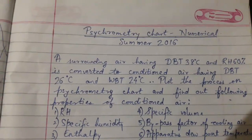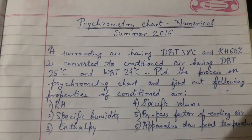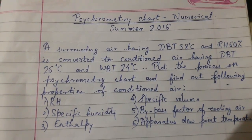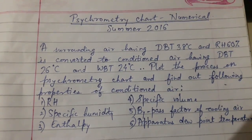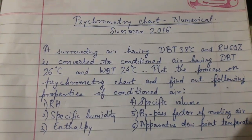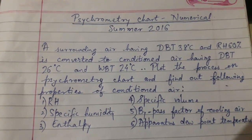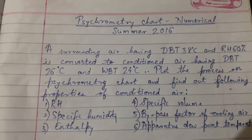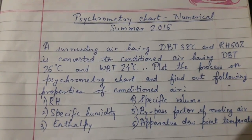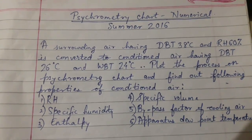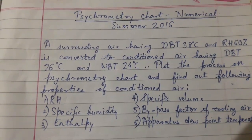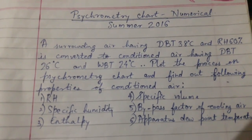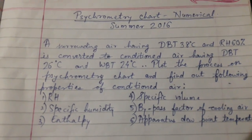Today's topic is a numerical related to the psychrometry chart which was asked in Summer 2016. A surrounding air having dry bulb temperature 38°C and relative humidity 60% is converted to conditioned air having dry bulb temperature 26°C and wet bulb temperature 24°C. We have to plot the process on the psychrometry chart and find the following properties of conditioned air: RH, specific humidity, enthalpy, specific volume, bypass factor of the cooling coil, and apparatus dew point temperature.